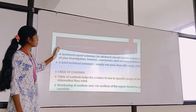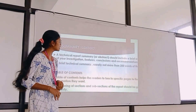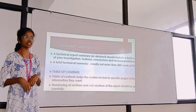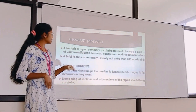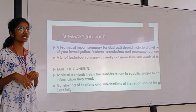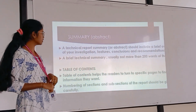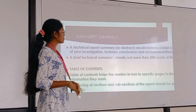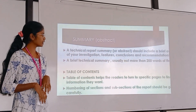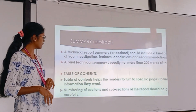Now, the next section is the summary. A summary is also known as an abstract. A technical report summary should include a brief overview of the investigation, findings, conclusions, and recommendations. It should be very short and concise — usually not more than 200 words.